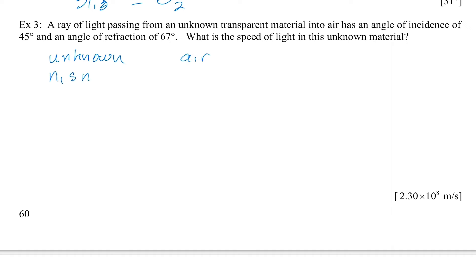So N1 sin θ1 equals N2 sin θ2. N1 is the unknown, so we don't know what that is. Sin θ1 incidence. Yes, the angle of incidence, that's in the first material as it's coming into the surface.